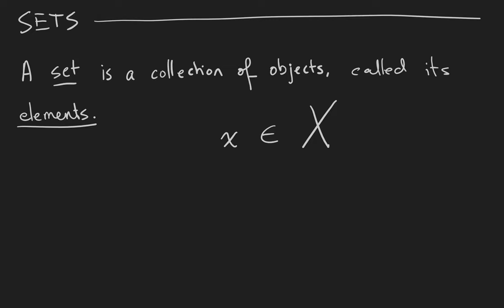The first thing we're going to talk about in discrete math is something called a set. It actually turns out that every mathematical object you've ever encountered before is probably a set. So a set is a collection of objects which are called its elements. You can see here the notation for the statement little x is a member of the set X.